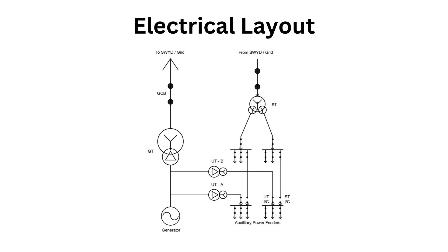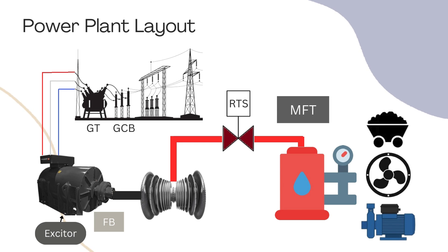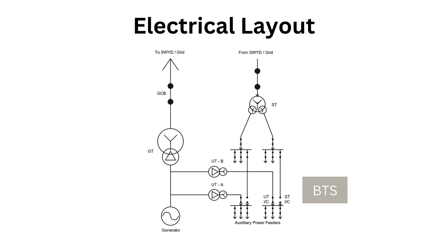Each element of the power plant requires an on/off button for control. The GCB controls the connection between the grid and the generator, and the field breaker controls the excitation system. The RTS cuts off the steam flow to the turbine, and the Master Fuel Trip (MFT) cuts off the fuel flow and extinguishes the flame in the boiler. The Bus Transfer Scheme (BTS) is used for UT/ST changeover to select the power source — either the Station Transformer or Unit Transformer.